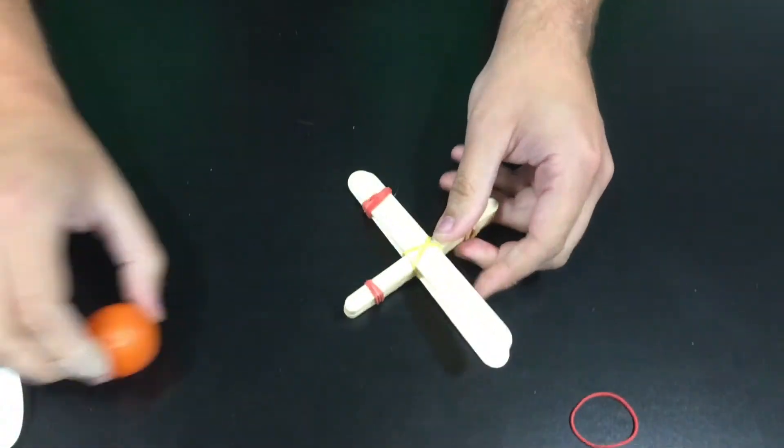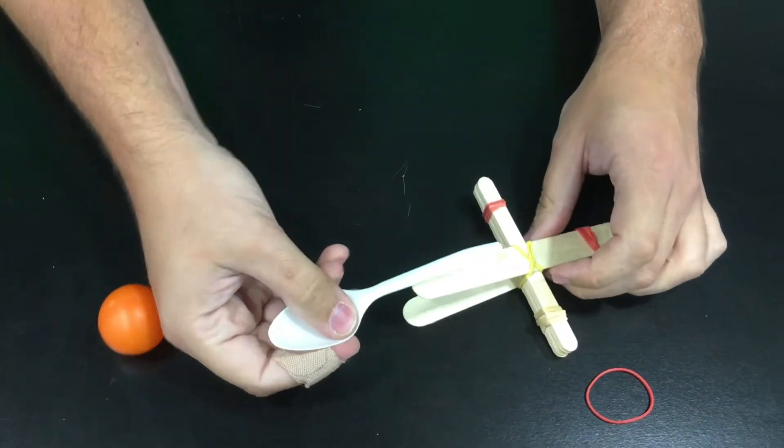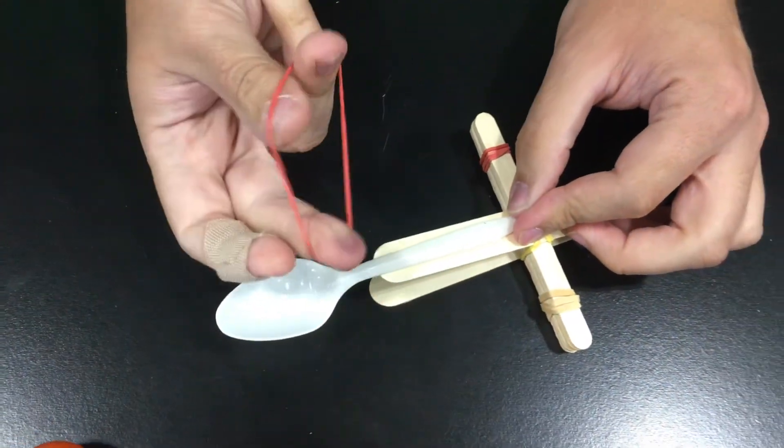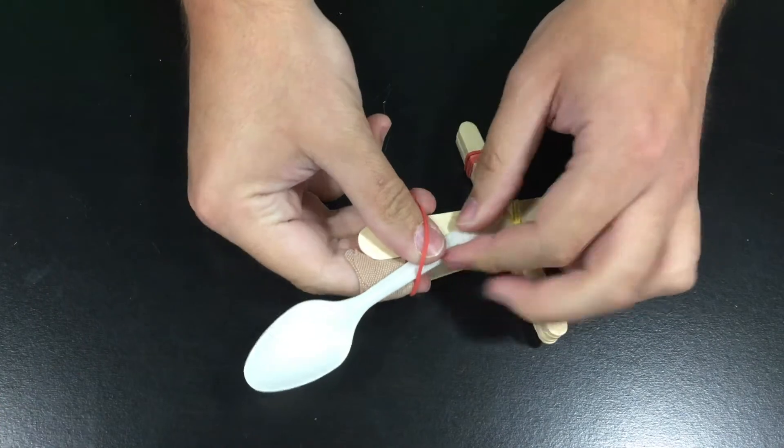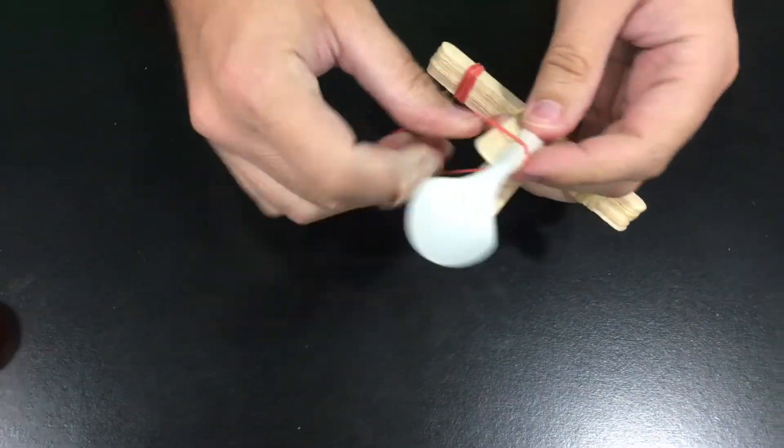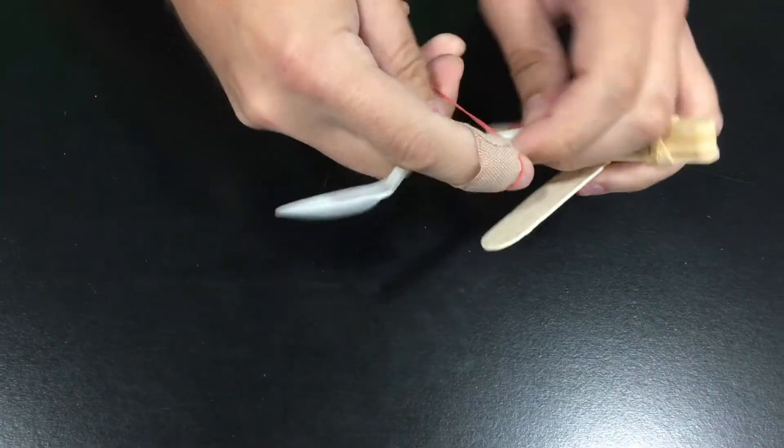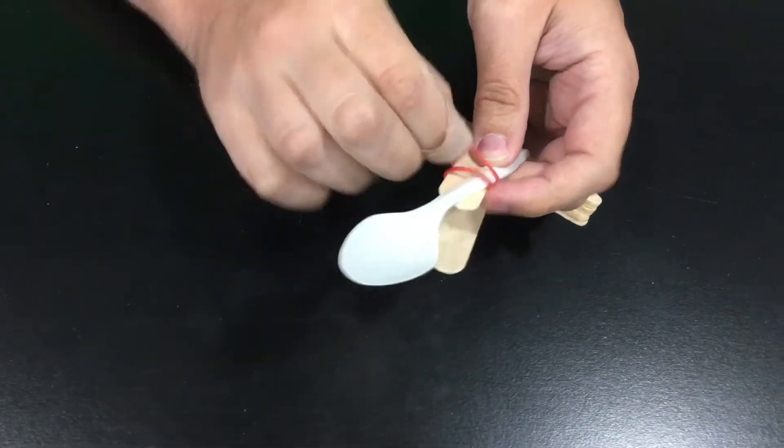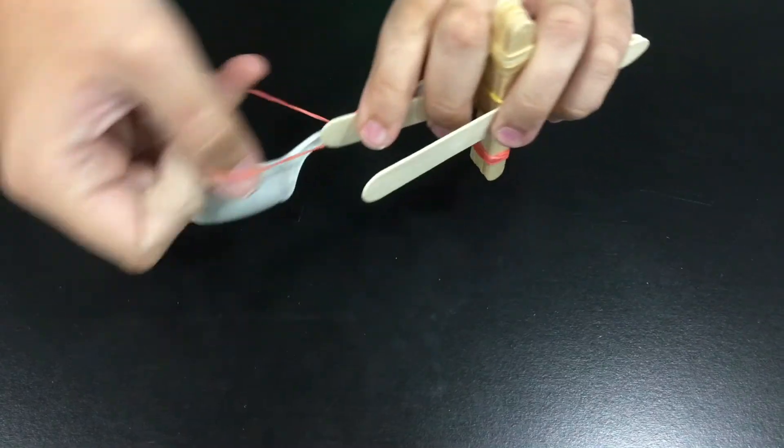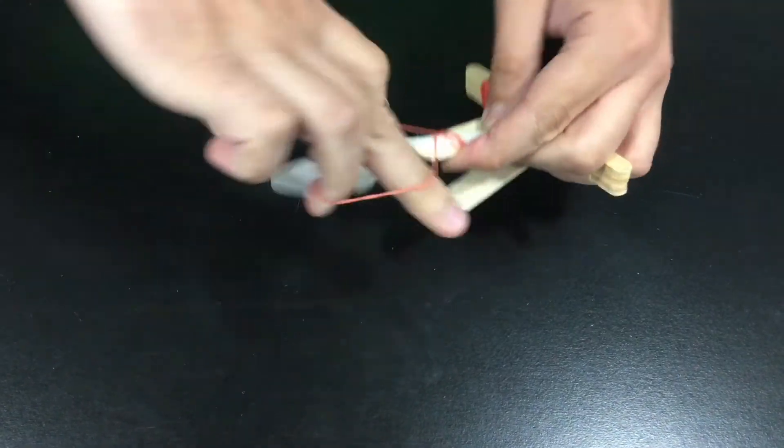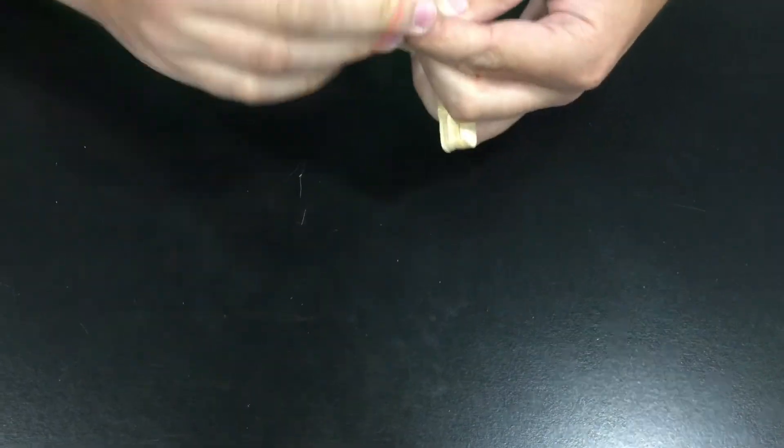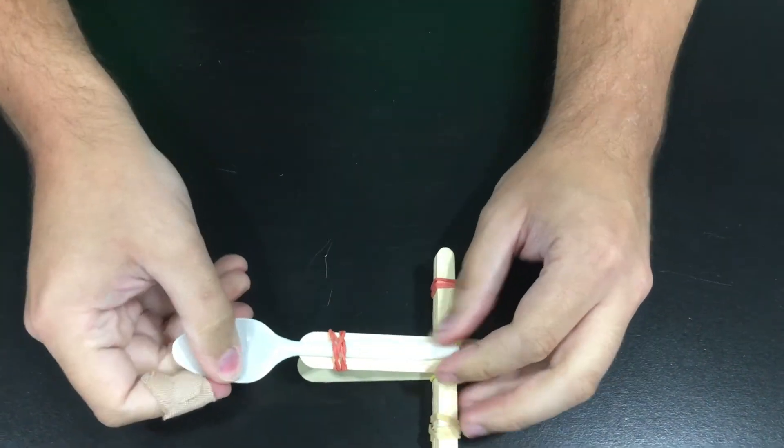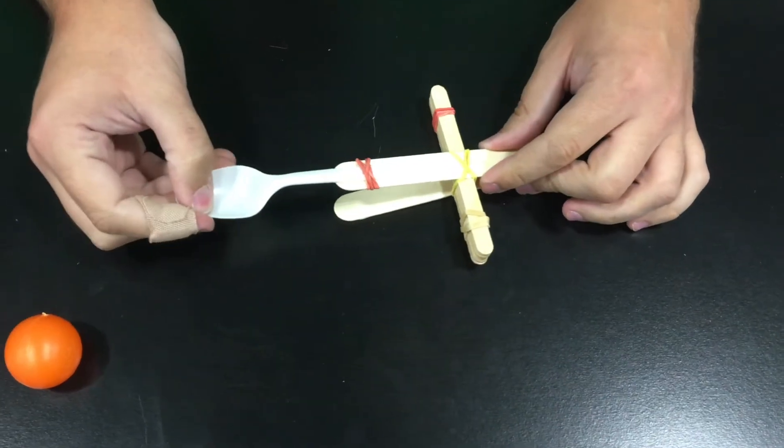You're going to add your spoon, which is going to be the actual launching device for your project. So you place the spoon in the large tongue depressor, and with a rubber band you're going to attach it securely. The tighter you get it on there, the better it's going to work for you.